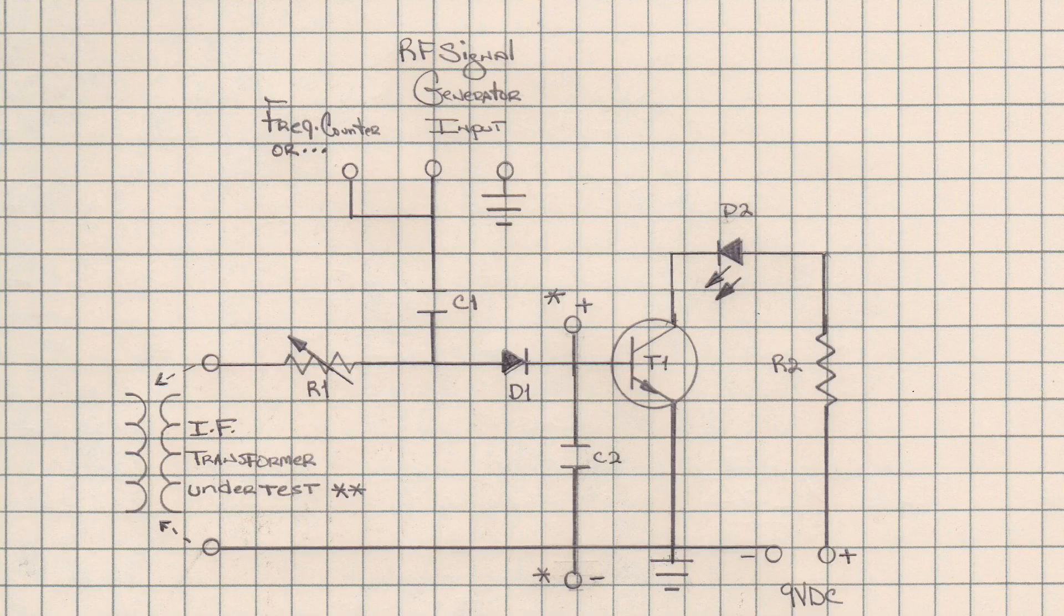Going back over to the left, R1. I threw that in there because I was looking for a high resistance there to reduce the loading on the IF transformer. My final adjustments was only around 13K. So if you build this, you may want to play around with that or even omit that particular part.